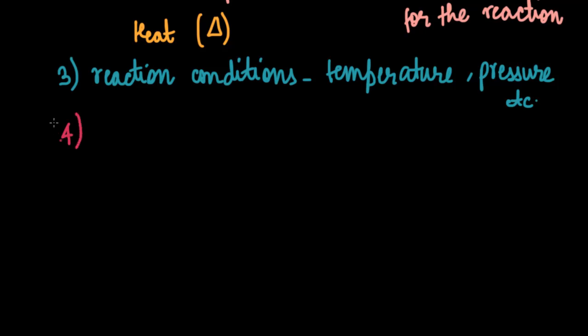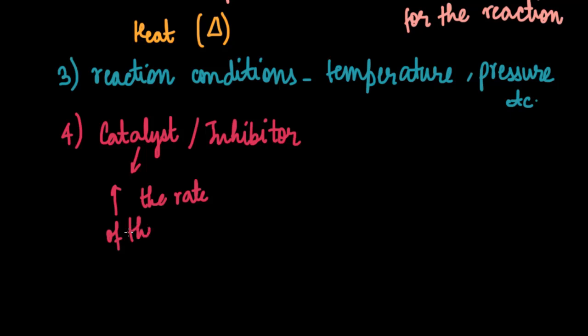The next thing that a chemical equation can tell us is whether any catalyst or inhibitor is being used for the reaction. A catalyst is a substance that increases the rate of the reaction. It makes the reaction faster. While an inhibitor slows down the reaction, it decreases the rate of the reaction. This can also be mentioned on the arrowhead of a chemical equation.